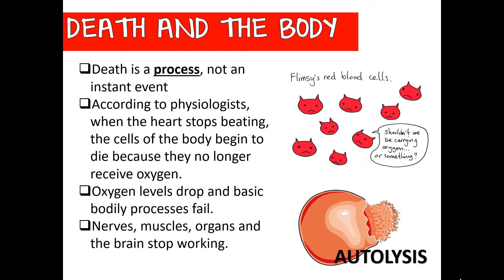When somebody dies, the first stage involves a process called autolysis. Immediately after death, the heart stops beating and blood stops circulating, so cellular respiration stops. The body can't get the oxygen it needs or remove waste, causing excess carbon dioxide to create a very acidic environment for cells. Cells can't survive in that environment, so cellular membranes begin to rupture and burst, releasing enzymes. Death is a process that happens at the cellular level.